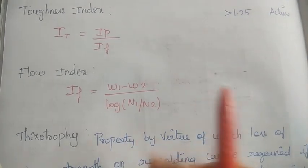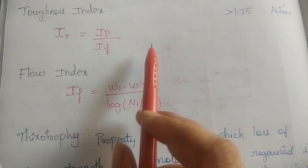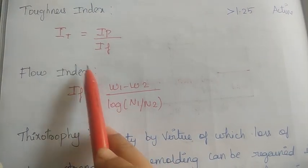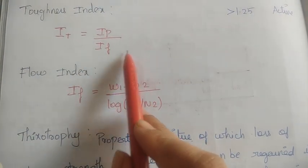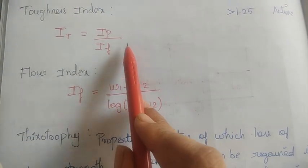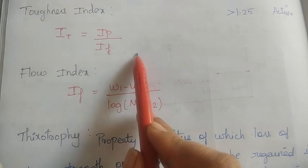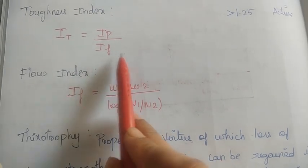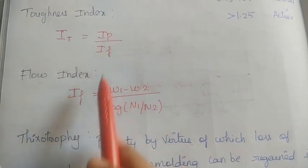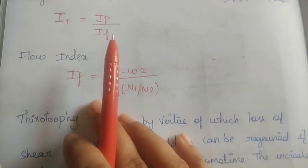The toughness index IT is equal to plasticity index IP divided by flow index IF.